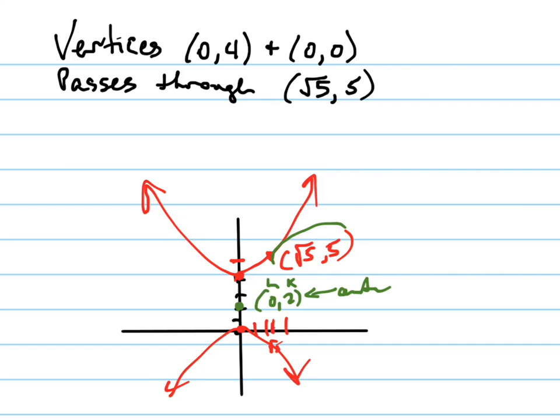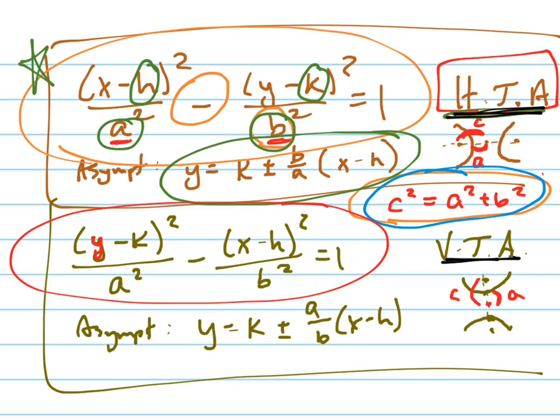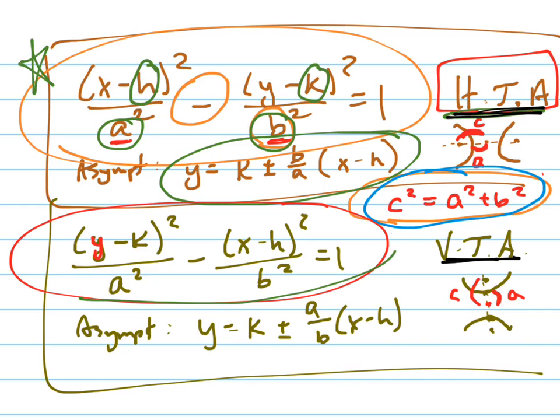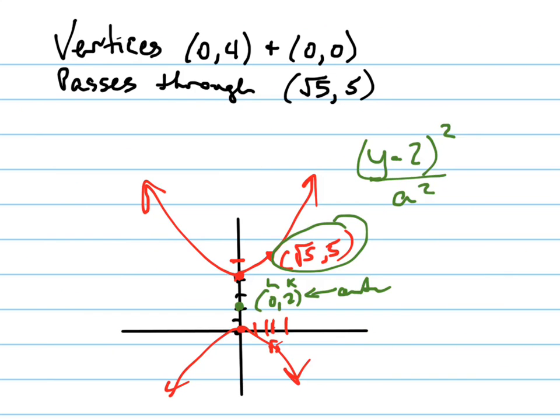And I'm going to use this point to find the other things that I need. So let's write out my equation. It's x minus 0 squared, which is just x²... I think I'm writing the equation wrong. I'm supposed to start with the y. So it's (y - 2)² all over a² minus x² over b² equals 1.